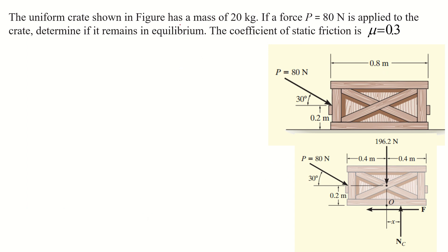In this example, the uniform crate shown has a mass of 20 kg, so its weight equals 20 multiplied by 9.81, which equals 196.2 N. A force of 80 N acting at 30 degrees with the horizontal is applied to the crate. We need to determine whether the crate remains in equilibrium or moves. The coefficient of static friction is given as 0.3.